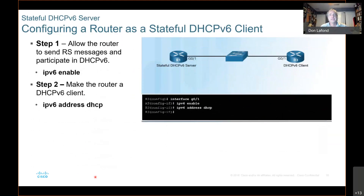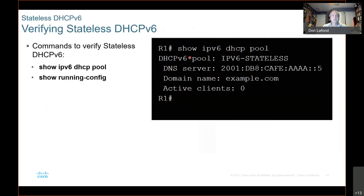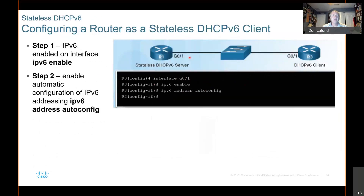Configuring a router as a stateful DHCP client — here's the IPv6 address command. You have to enable IPv6 on this interface, otherwise it's not going to work. And then you just say IPv6 address dhcp. Now, when I said auto-config earlier, that's actually setting the A flag — auto-config sets the A flag.